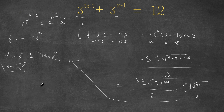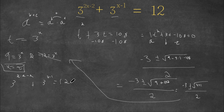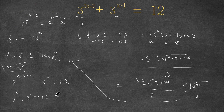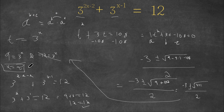Let's verify by plugging x equals 2 back into the original equation: 3 to the power of 2 times 2 minus 2, plus 3 to the power of 2 minus 1, equals 12. That's 3 to the power of 2 plus 3 to the power of 1, which is 9 plus 3, which equals 12. Since 12 equals 12, our solution x equals 2 is confirmed correct.